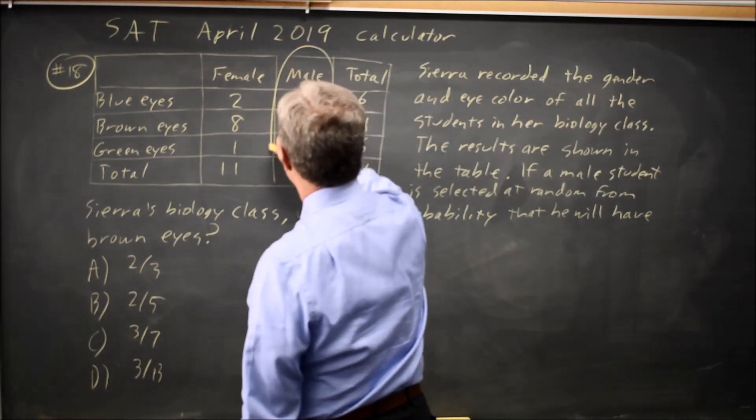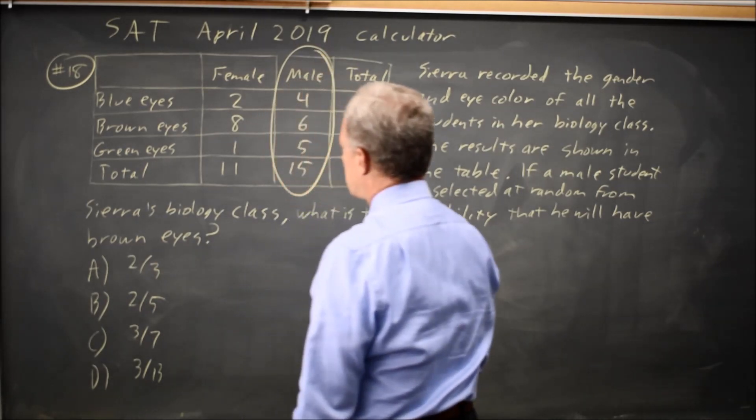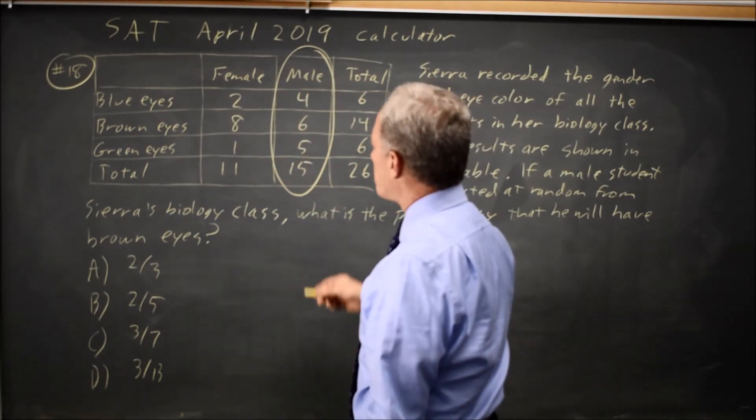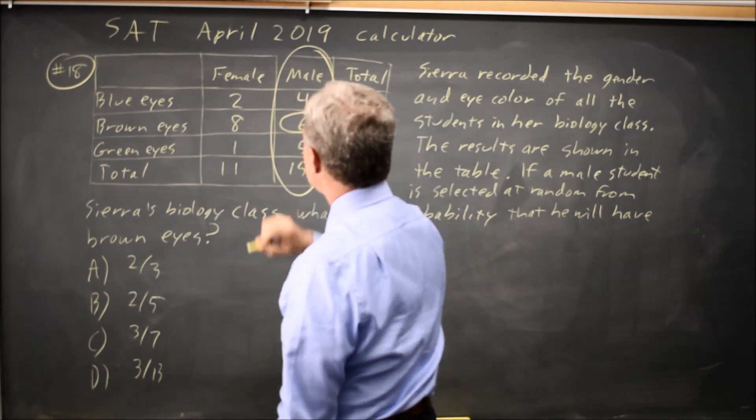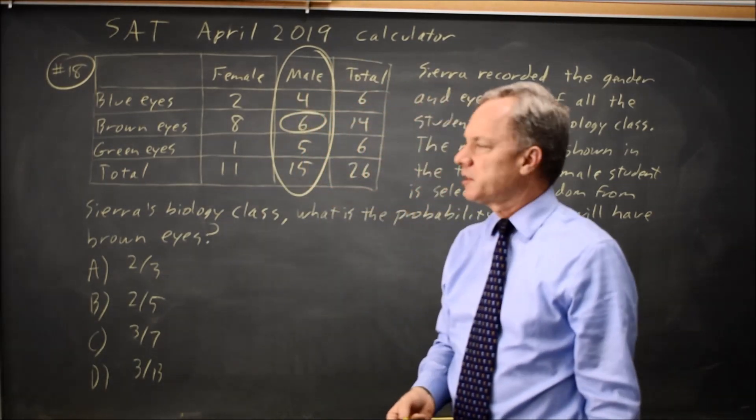So male students, we're looking at this column and within that column we want to know brown eyes, which is only those in the brown eye row that are in that column.